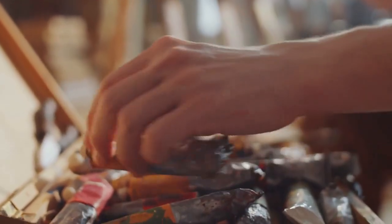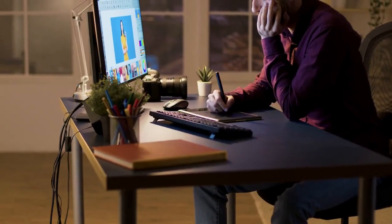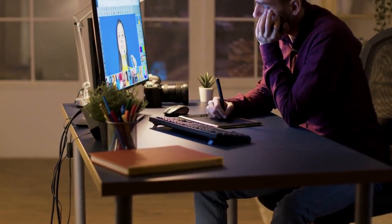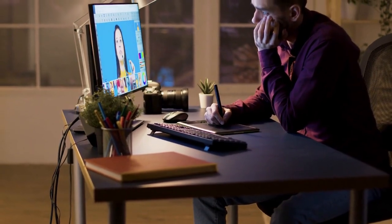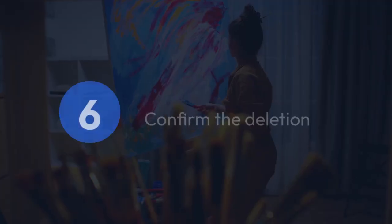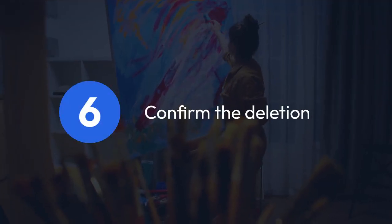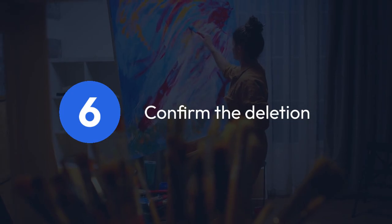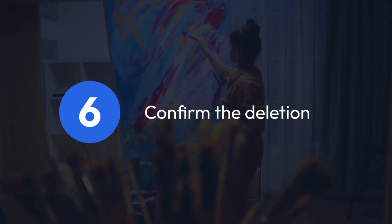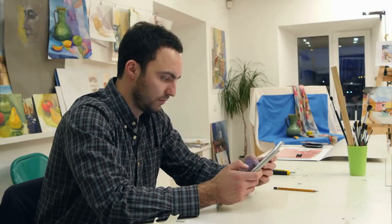Tap on Delete. A confirmation pop-up may appear asking you if you are sure you want to delete the brush. Confirm the deletion. The brush will be permanently removed from your My Materials list.